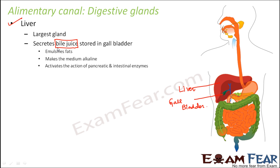Carbohydrate digestion and protein digestion have already been covered, so what remains is fats. The digestion of fats happens with the help of bile juice, which is secreted by the liver and stored in the gallbladder. This juice makes the medium alkaline — the opposite of acidic. In a basic environment, bile juice activates the action of pancreatic and intestinal enzymes.